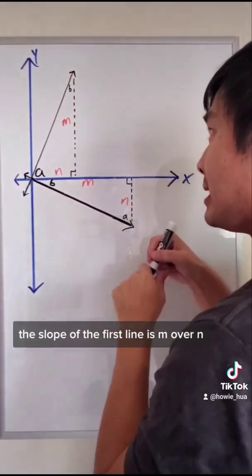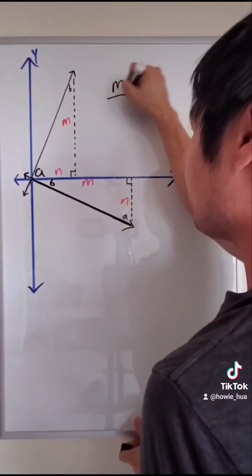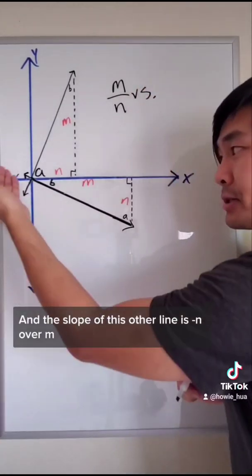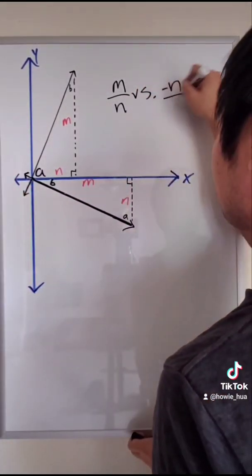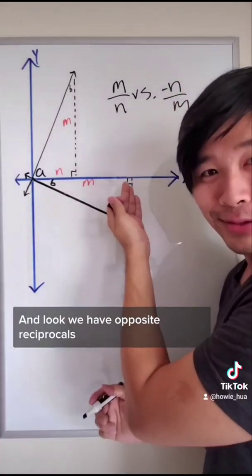The slope of the first line is m over n. And the slope of this other line is negative n over m. And look, we have opposite reciprocals.